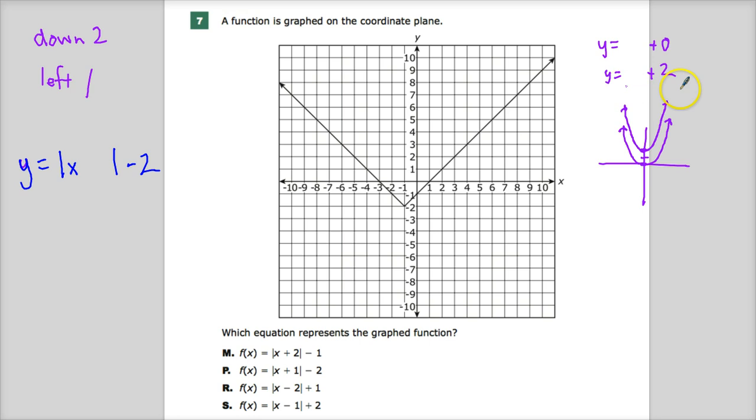Because, over here, if I had done y is equal to x squared minus 2, here and here. There you go.